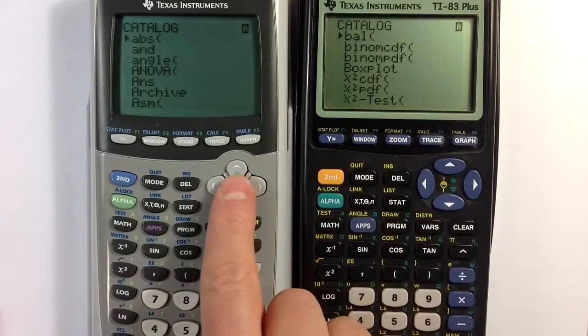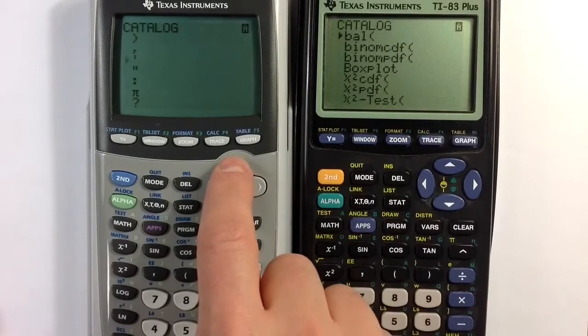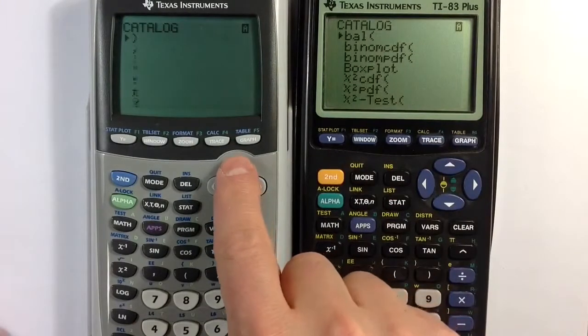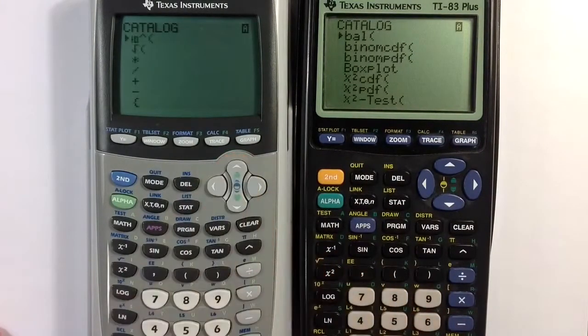If you hit the up arrow it will go into symbols, which are at the end of the catalog, so it kind of cycles through. And so if you hit the up arrow you can go through and type in different symbols that occur.